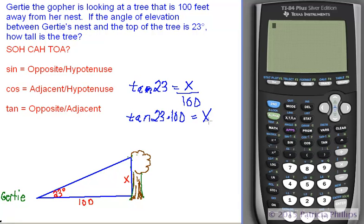So now we have the variable isolated. We just need to do some simple calculations in order to figure out how many feet the tree is.